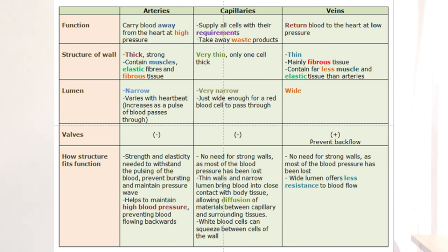The lumen of arteries is narrow, while the lumen of veins is wider. Arteries do not have valves because blood in them flows at very high pressure and cannot flow backwards. In veins, blood moves at very low pressure, so we have valves in place to control the flow and ensure blood only moves in one direction.